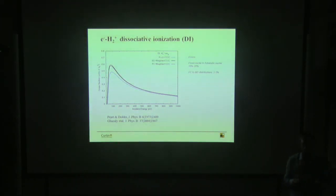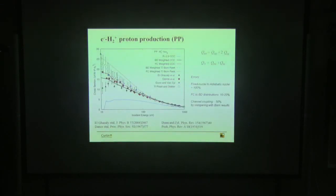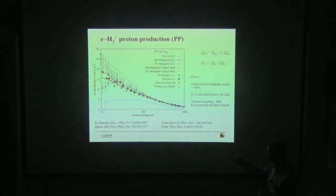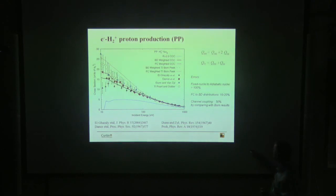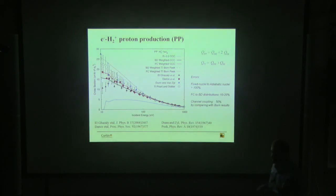There is a large experimental error here. For the proton production cross-section, we again see a very large difference between fixed-nuclear results and results that account for the distribution of vibrational levels — the error can be about 100% between the blue line and the black and red lines. Black and red lines are proton production cross-sections for different distributions of vibrational levels.